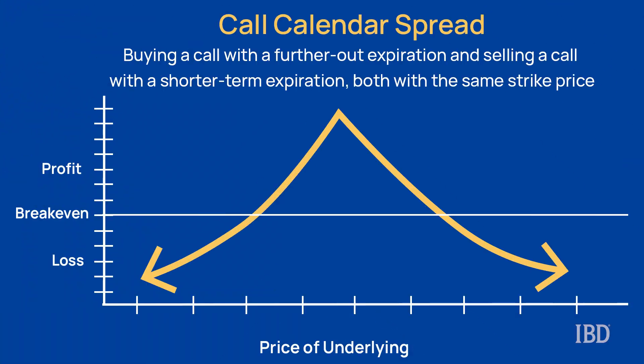For today's trade we're going to be looking at an option play known as a call calendar spread. A calendar spread is considered a more advanced strategy and not recommended for beginners, so if you've never done this before please follow along in a virtual account until you get the hang of it. A calendar spread is an income trade that involves selling a short-term option and buying a longer-term option with the same strike price. Traders typically use call options unless the trade has a bearish bias, in which case they would use puts.